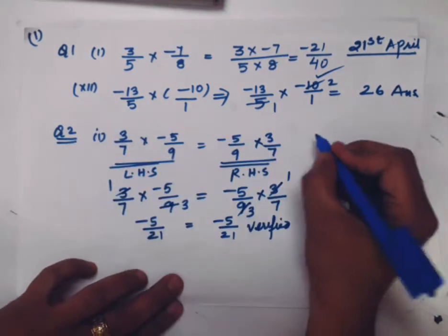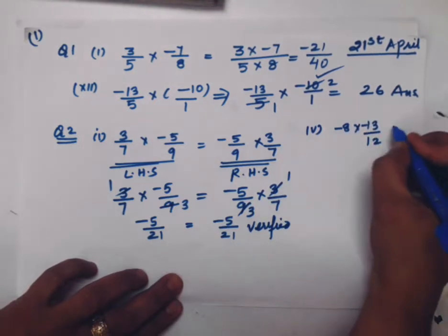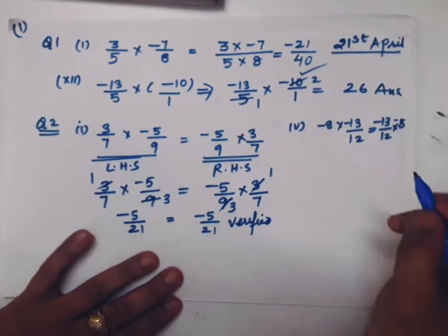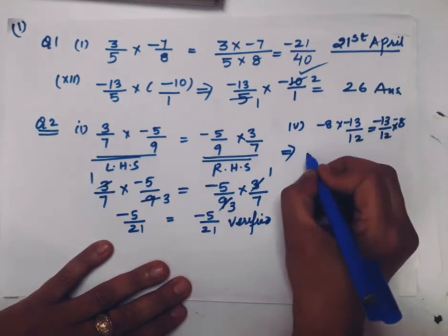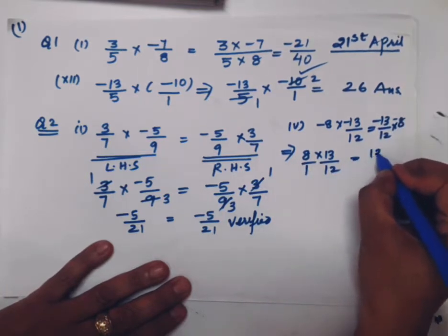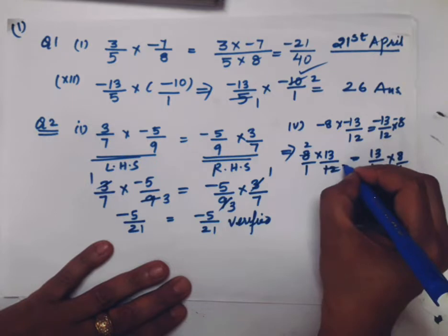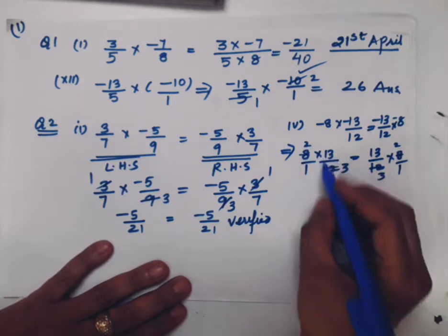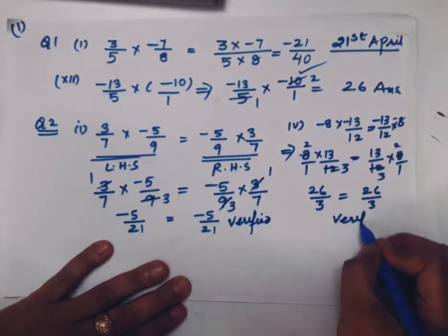One more part. Fourth part. -8 × -13/12 = -13/12 × -8. Let us see if any number can be cancelled. First minus minus is plus. 8 × 13/12. Here 8 into 1. Minus minus plus. 13/12 × 8/1. Can 8 and 12 be cancelled? 4 twos are 8, 4 threes are 12. 13 twos are 26, 3 ones are 3. 13 twos are 26, 3 ones are 3. Again you can say answer verified.